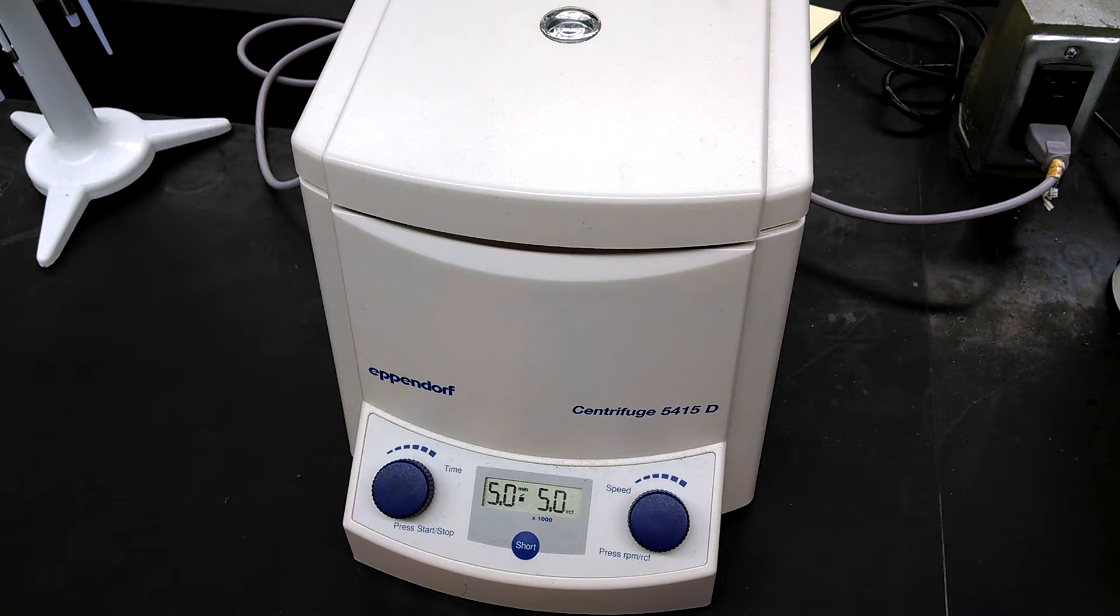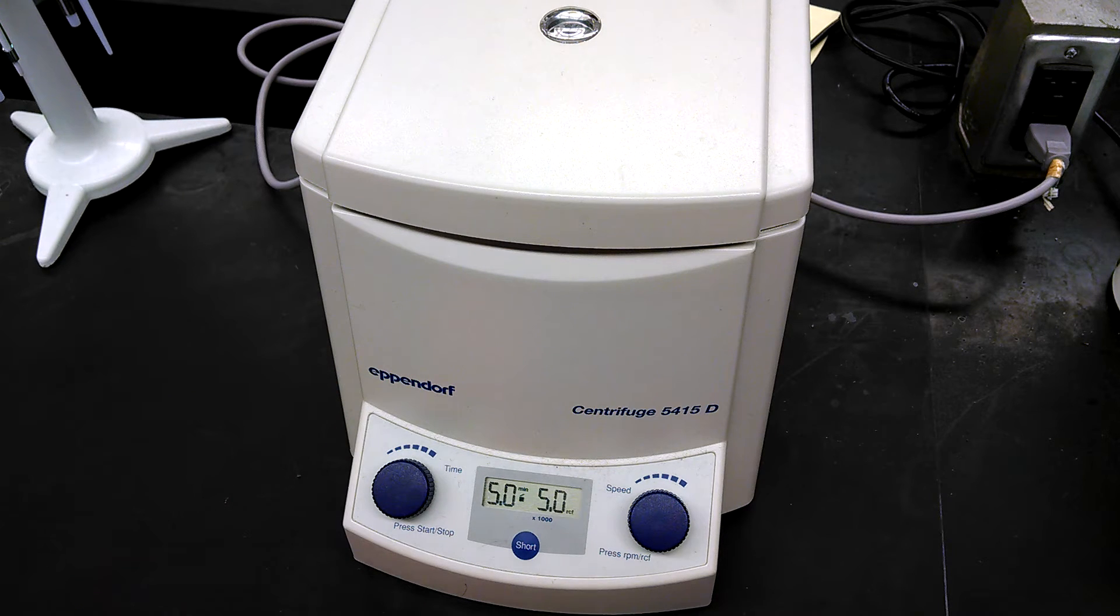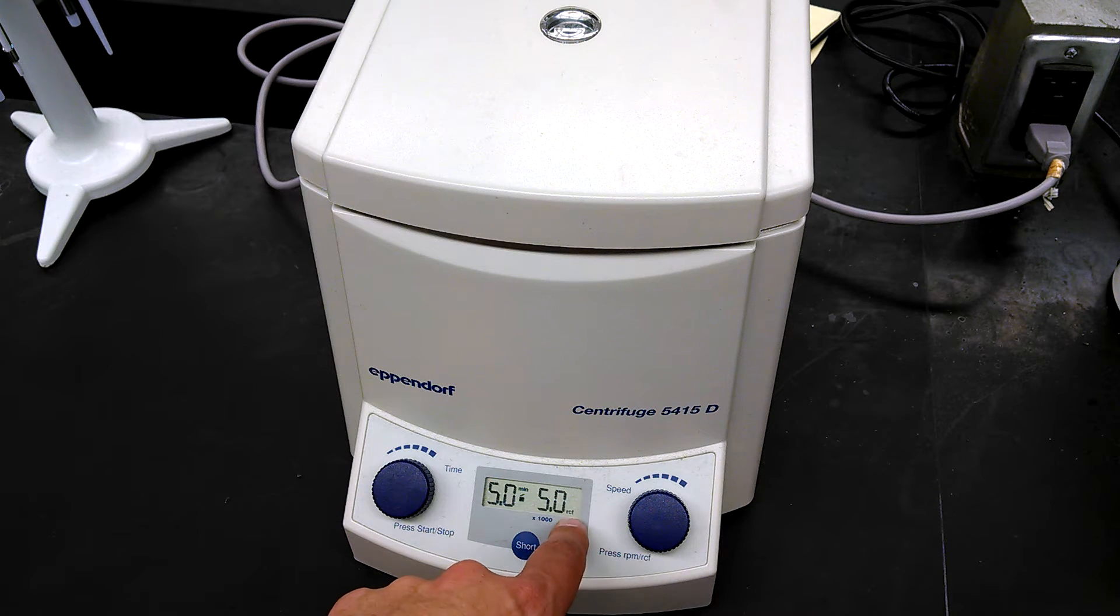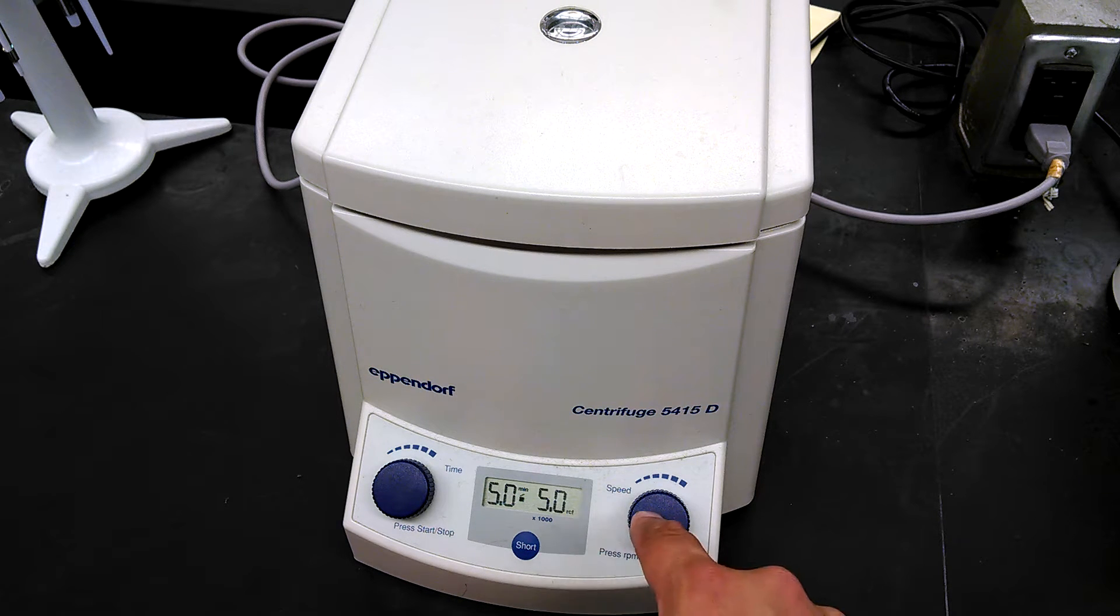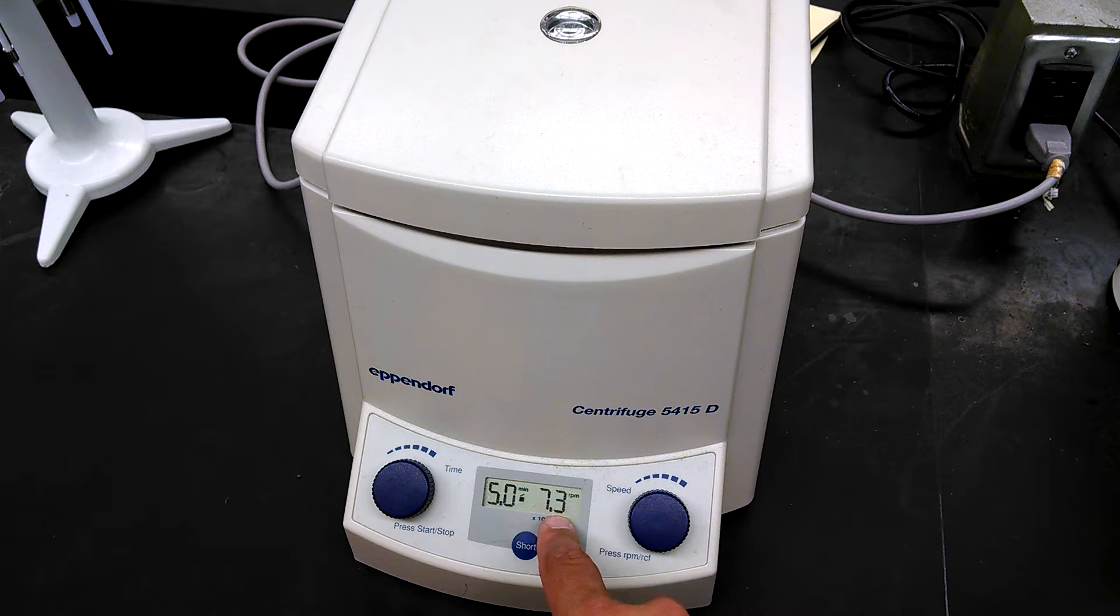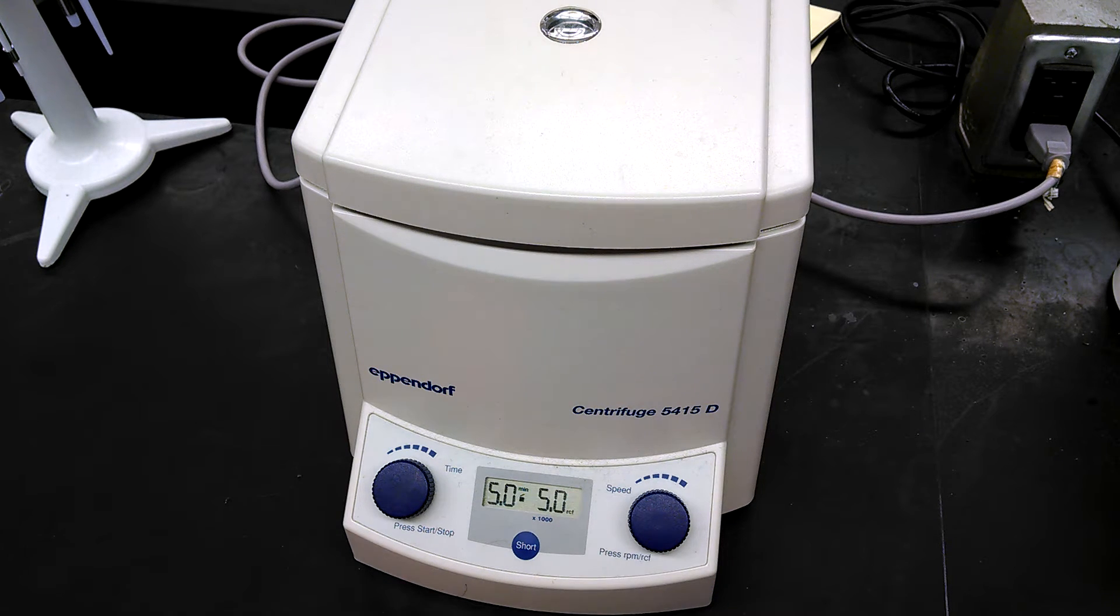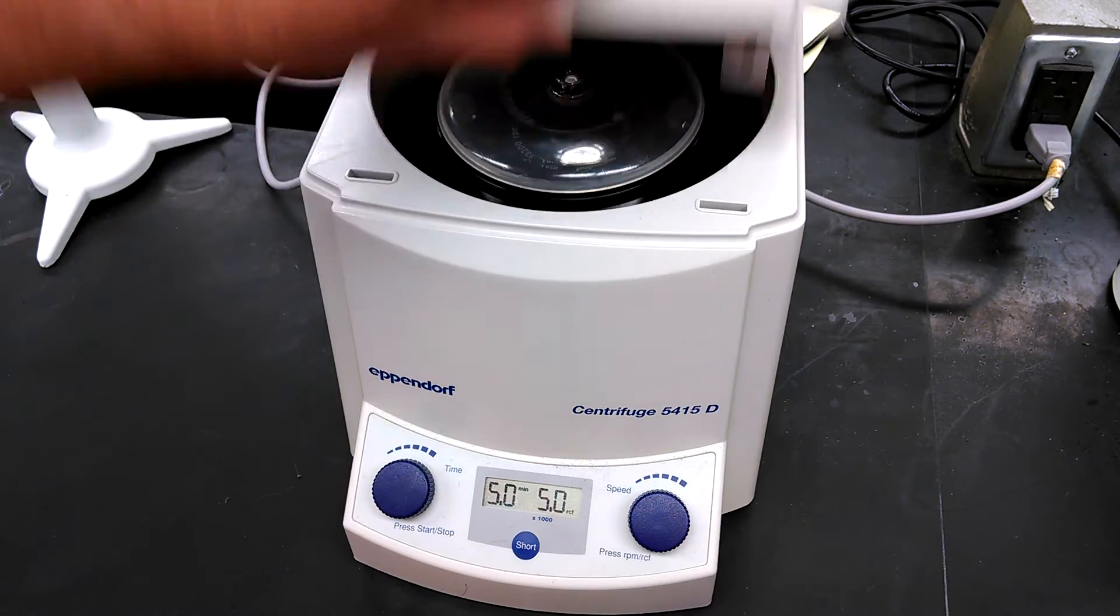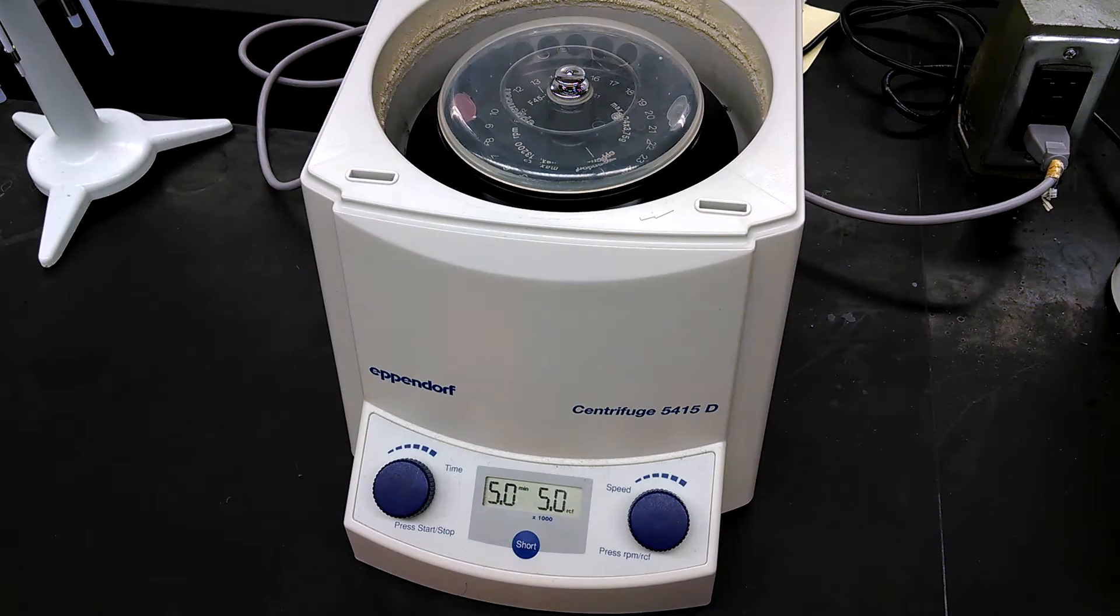But right now, what we want is a five-minute spin. It's already set at five minutes. You can change it there. And at 5,000 times gravity. And so these numbers are times 5,000. RCF means gravity. We can switch this from RCF to RPM by pressing the button. It goes back and forth. You can see that's actually 7,300 RPM. Well, we want gravity for this instruction. When it's turned off, when it's not spinning, I should say, we can open the lid. So let's do a cooking show demo and say we have done this.